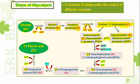PGAL, in the presence of NAD+, gets reduced so that NAD+ is converted to NADH. It is then converted into 1,3-bisphosphoglycerate, where a phosphate is attached to the 1st and 3rd carbon atoms. Two molecules of 1,3-bisphosphoglycerate are produced — it is also a 3-carbon compound.